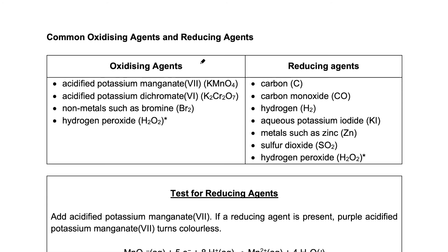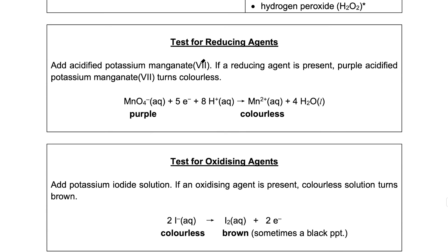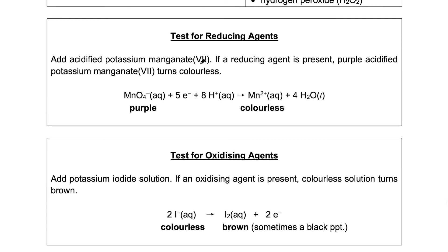The table below shows some common oxidizing agents and reducing agents. It is useful to know some of them and their color changes. The two most important ones that I would like to highlight in this video are potassium manganate(VII) and potassium iodide. They are used to test for the presence of reducing agents and oxidizing agents respectively.